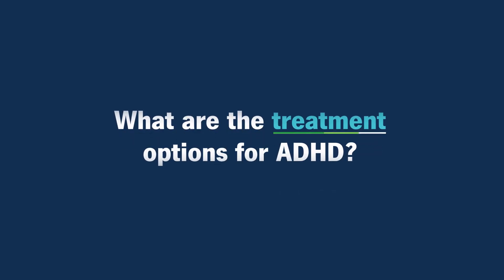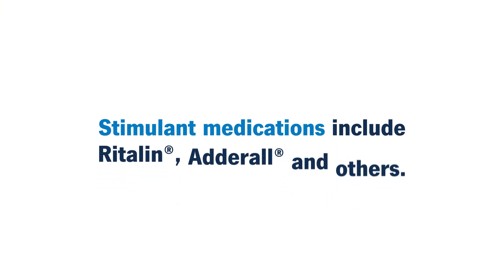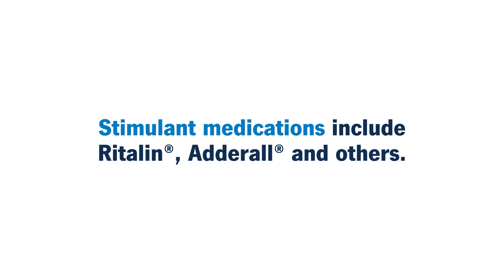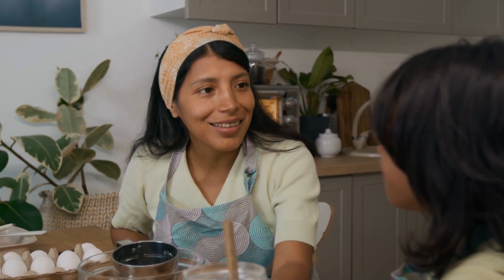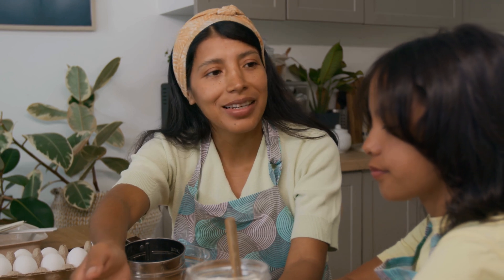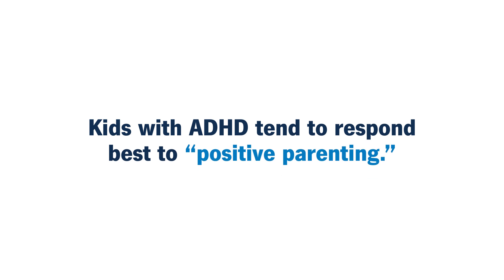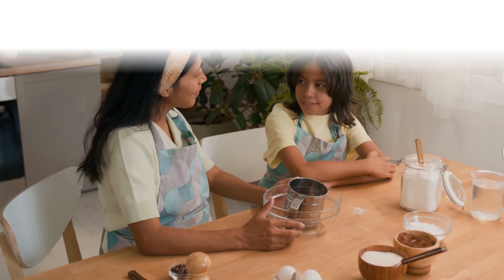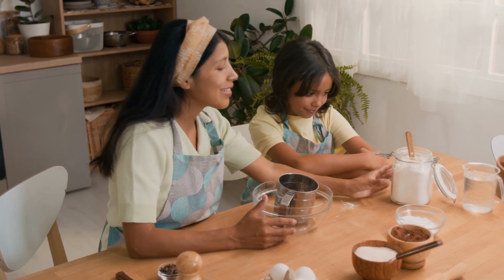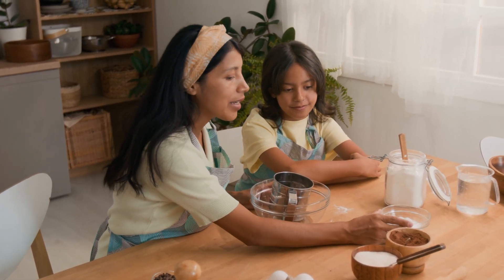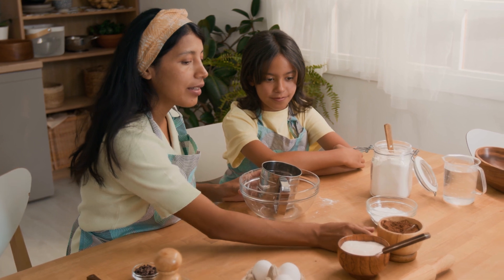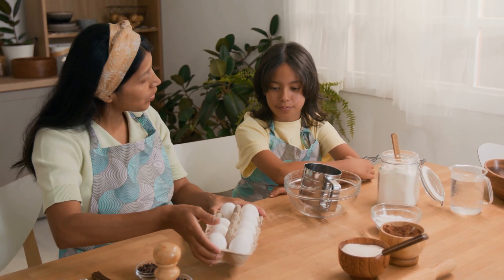What are the treatment options for ADHD? Medications are first-line treatment, and the first-line medications are the stimulant medications. Folks commonly hear the names of Ritalin and Adderall, but there are many, many other options. In addition to medications, parent training is really, really important. There are very specific strategies that work best for kids with ADHD. For example, kids with ADHD tend to respond best to what's called positive parenting — we use lots of praise, rewards, that sort of thing, with more minimal consequences to encourage good behavior while still keeping the child's self-esteem healthy.